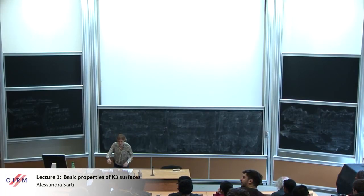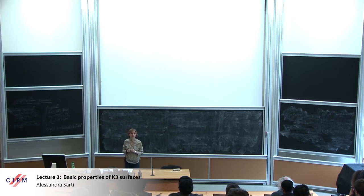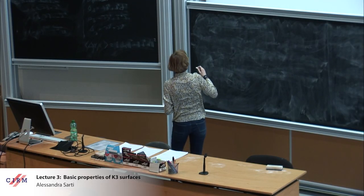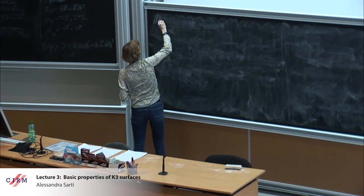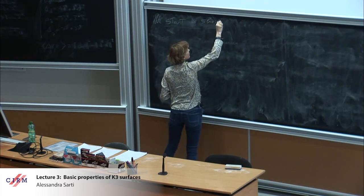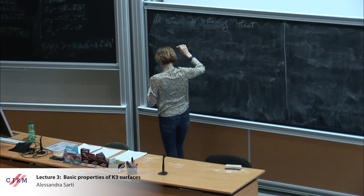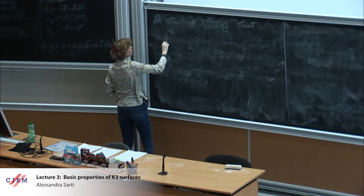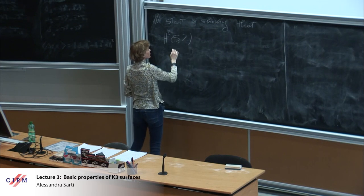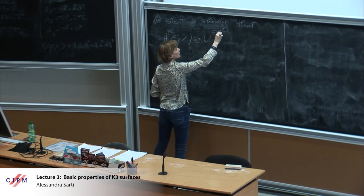Thank you very much. We finished yesterday showing that H2 is a free module of rank 22. What we want to show now, to finish the proof, is that H2(S,Z), where S is my K3 surface, is isometric to three copies of U and two copies of E8.